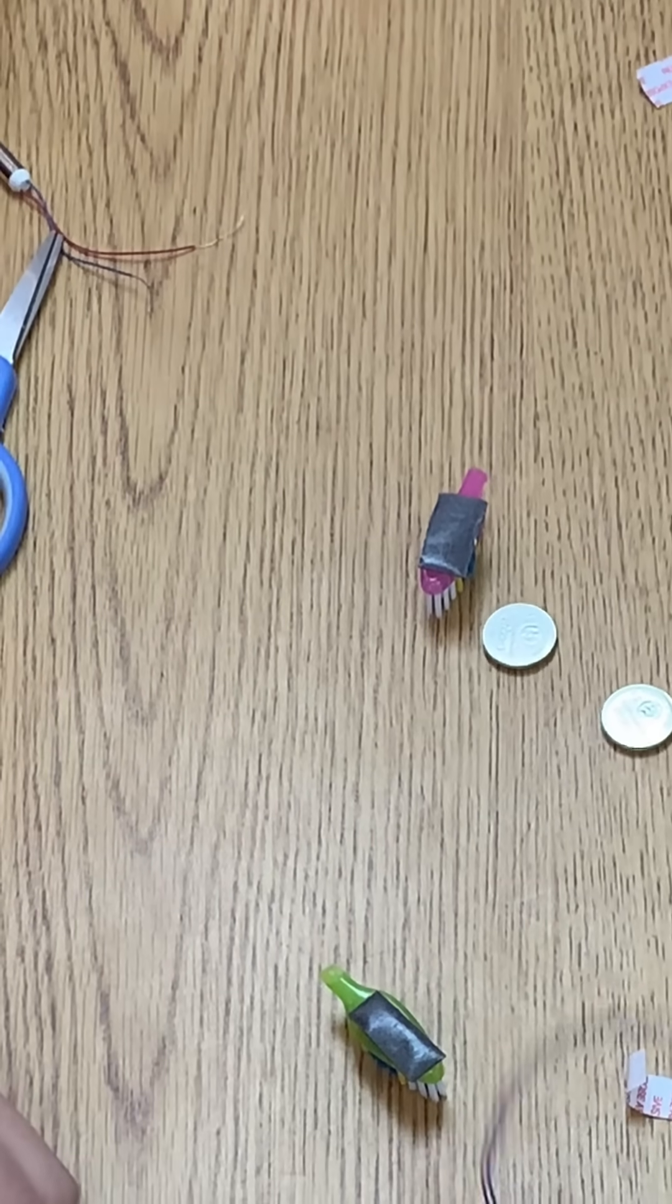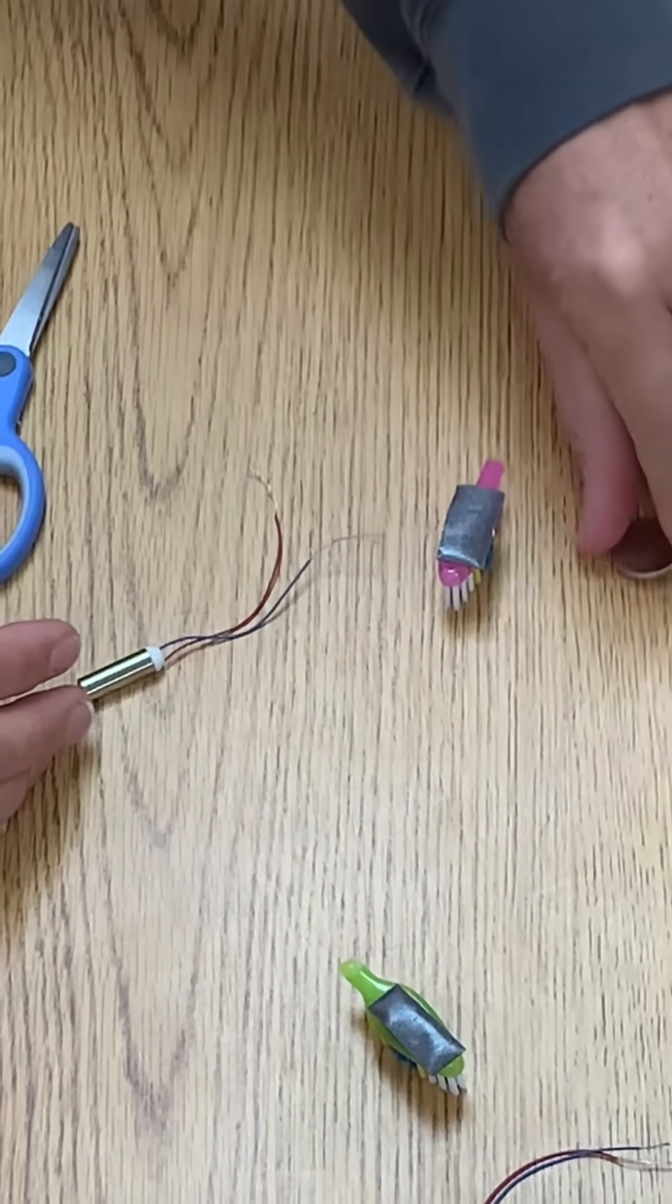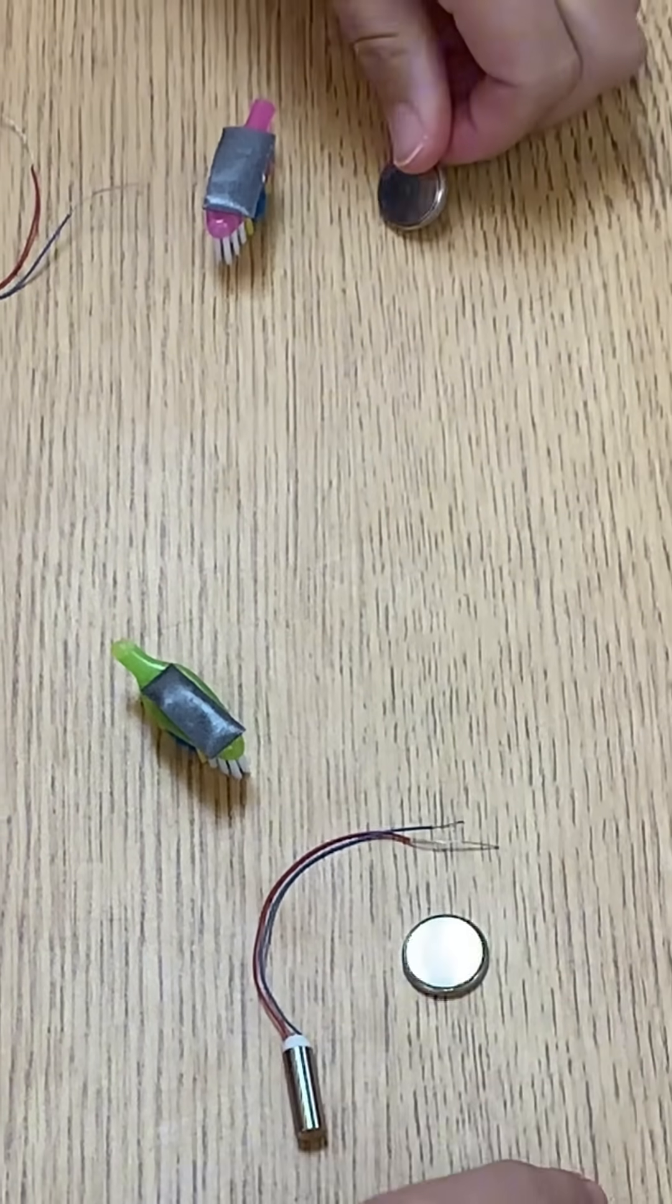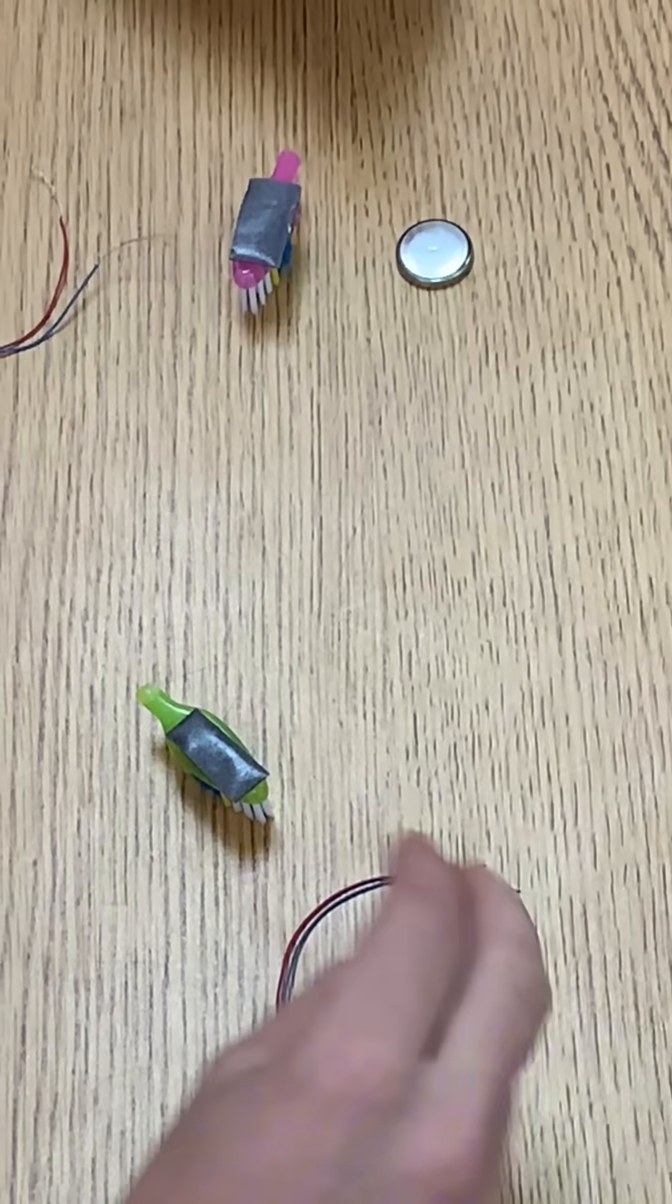Next thing you want to do is grab both the cell phone vibrator and your coin battery. You'll notice in the coin battery we have two sides - the plus side for positive and the bottom side is negative.